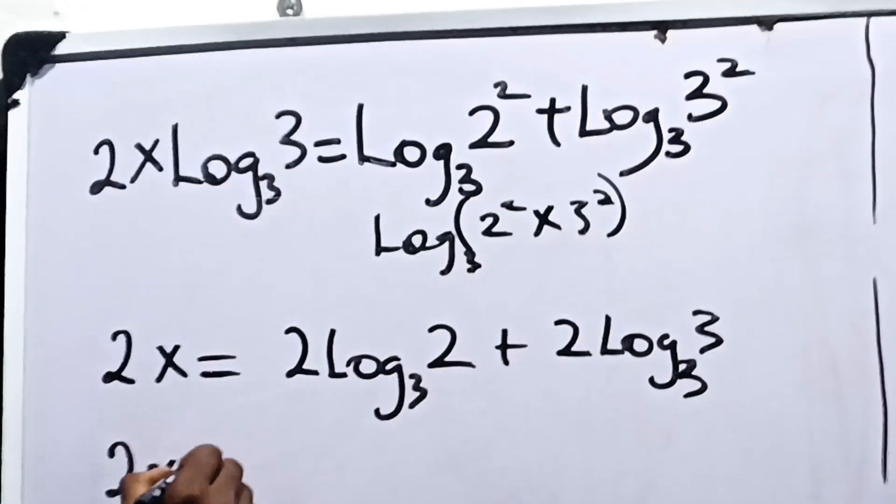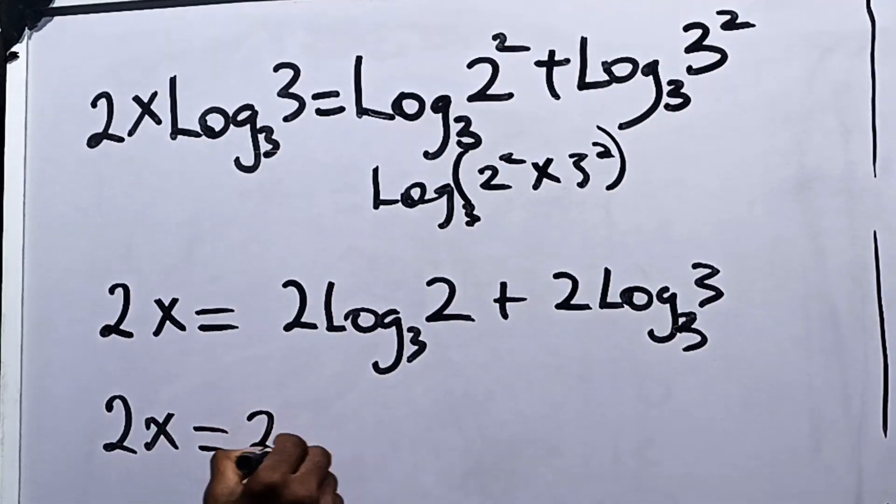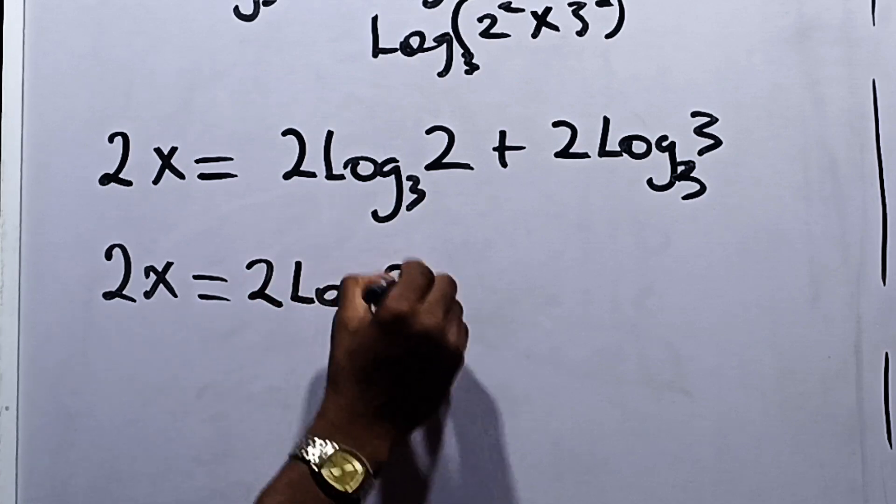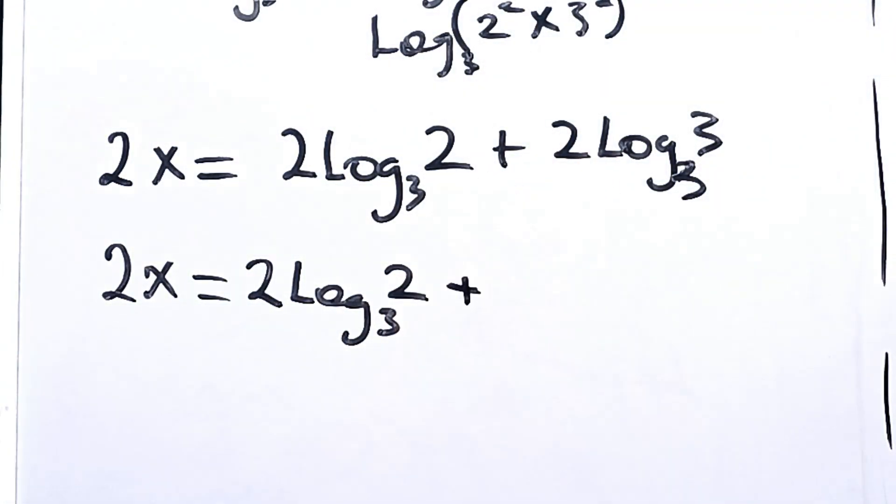Now 2x equals 2 times logarithm of 2 to base 3 plus 2 times 1, since logarithm of 3 to base 3 is 1.